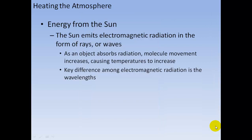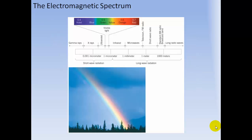Energy from the sun: the sun emits electromagnetic radiation in the form of rays or waves. As an object absorbs radiation, molecular movement increases causing temperatures to rise. The key difference among electromagnetic radiation is the wavelengths. The visible light spectrum lies between red and violet. Smaller wavelengths include ultraviolet, X-rays, and gamma waves, while larger wavelengths include infrared, microwaves, short waves, and long radio waves.